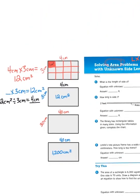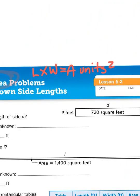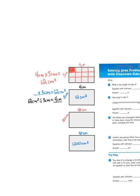So if I know the formula that length times width gives me the area in unit square, if I'm given the area and one of the measurements, either the length or the width, I can determine the missing factor or the other measurement.